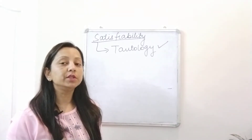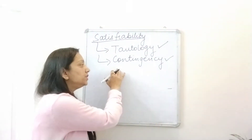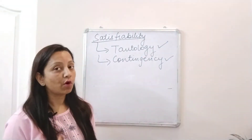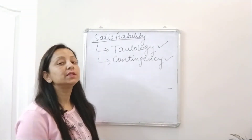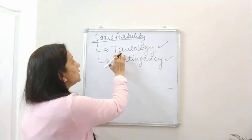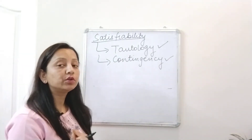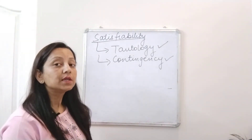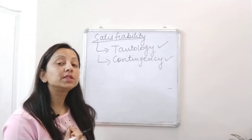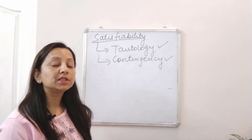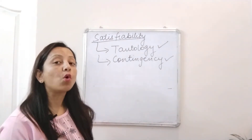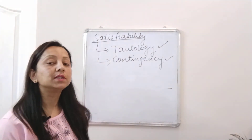A tautology is satisfiable because all values in its truth table are true, which certainly includes at least one true value. A contingency is also satisfiable because it has some truth values that are true. One important thing to note: every tautology is satisfiable, but not every satisfiable proposition is a tautology — because for satisfiability you only need at least one true value, whereas a tautology requires all truth values to be true.